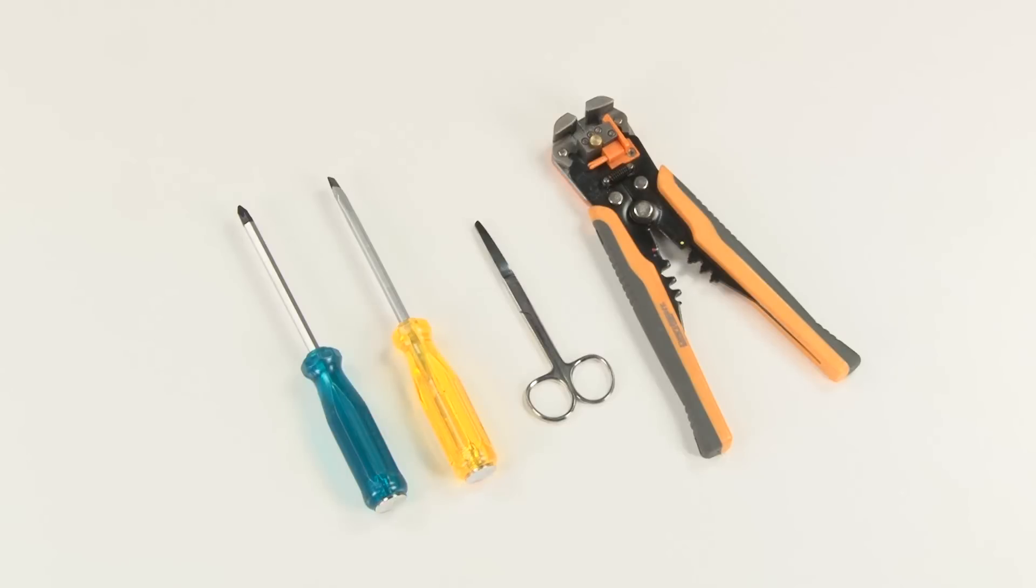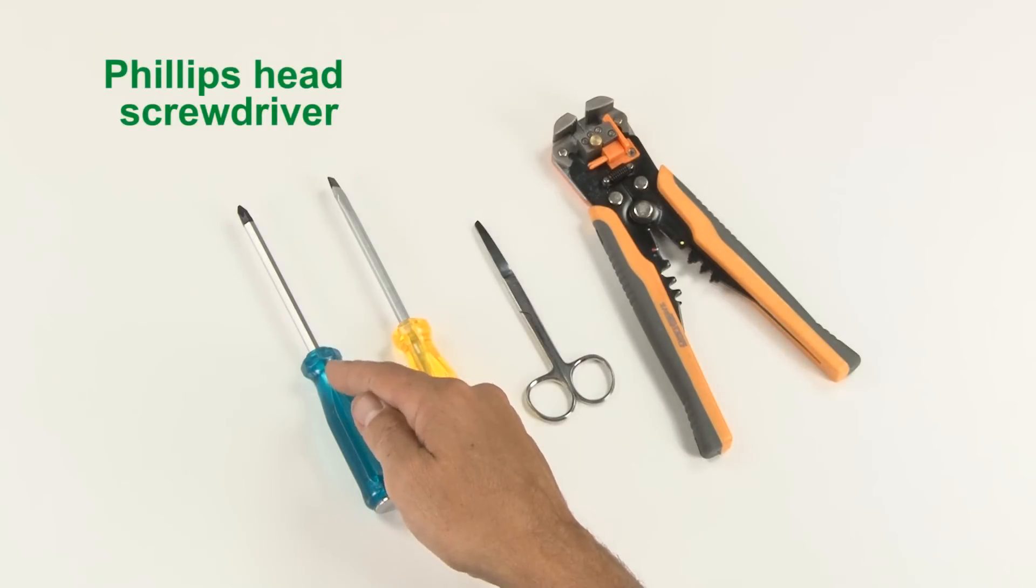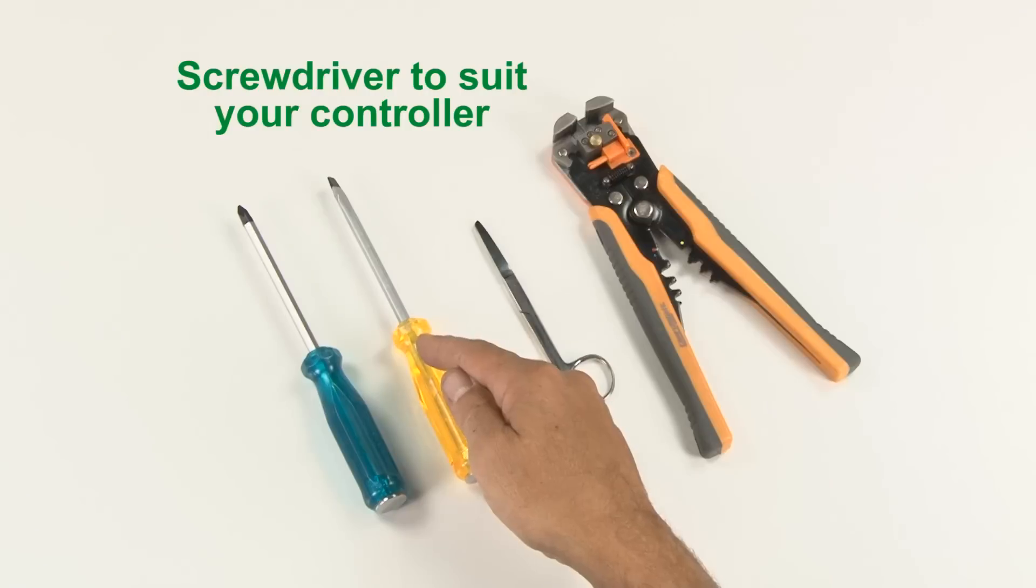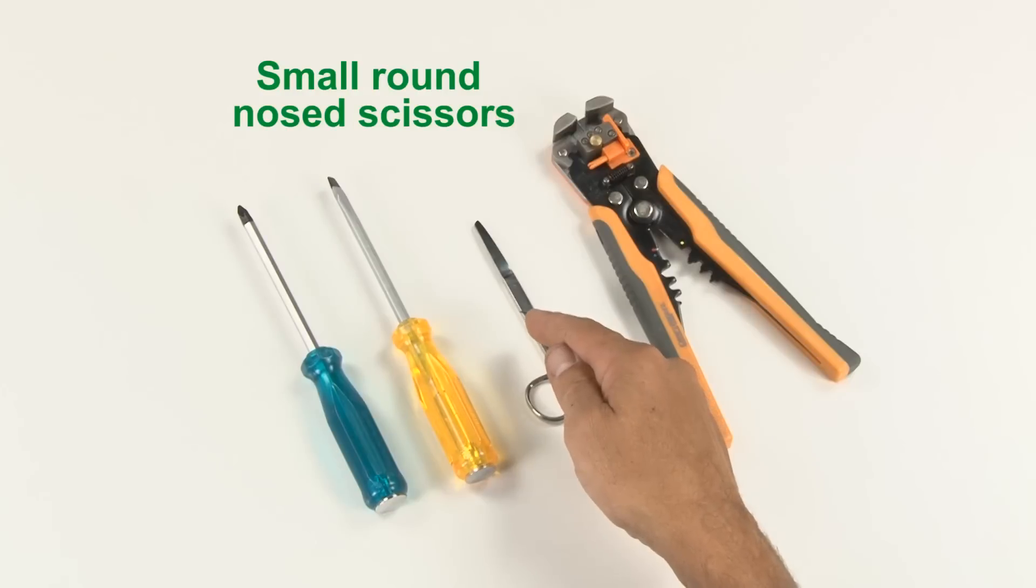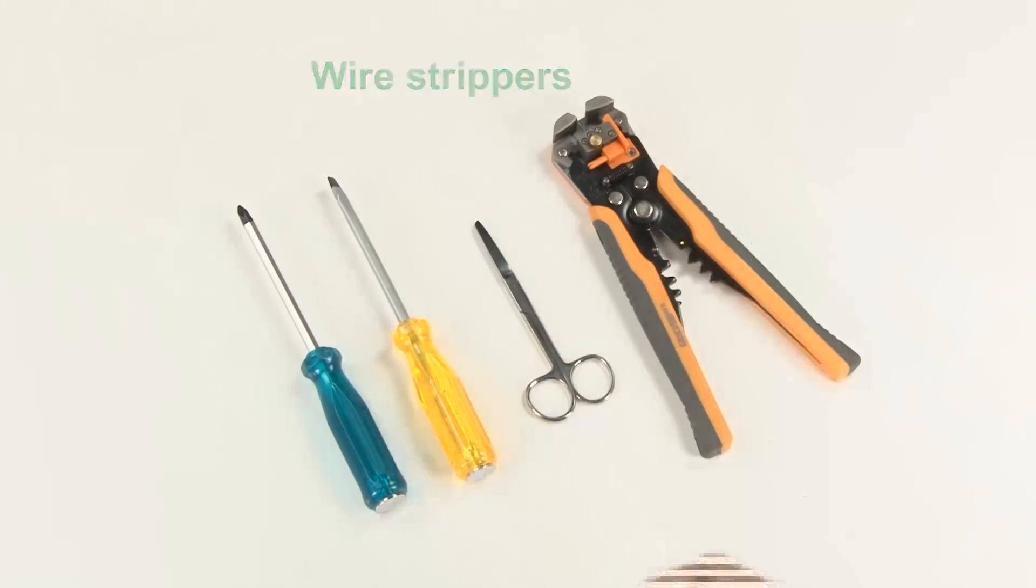You will also need tools including a Phillips head screwdriver to secure the lid screws, a screwdriver to suit the screws in your controller, a pair of small round nose scissors for peeling back the outer cover of your cable and some wire strippers for preparing the ends of your wires.